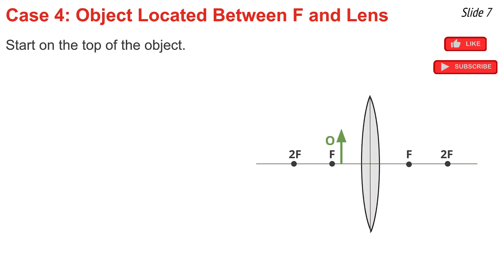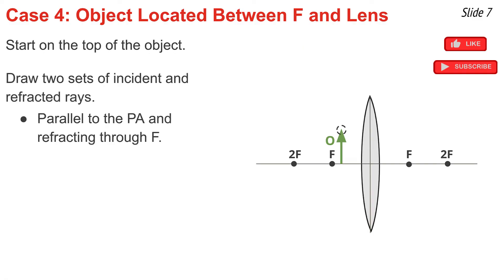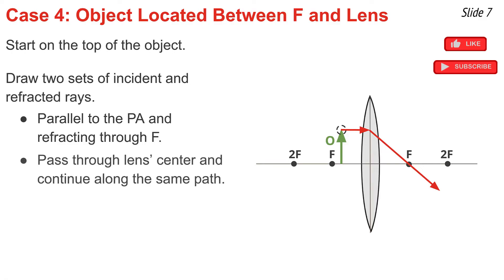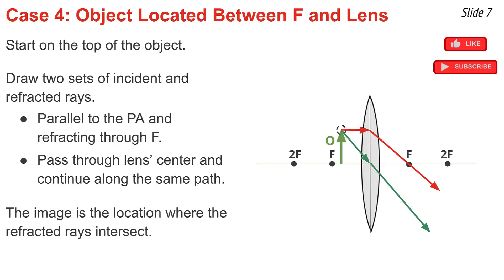My fourth and final ray diagram has the object located between the focal point and the lens — this ray diagram will look considerably different than the other three. I pick a point on the top of the object and draw two sets of incident and refracted rays. The ray of light traveling parallel to the principal axis refracts through the focal point as usual. Instead of the focal-point ray, I'll use the ray of light that passes through the lens's center and continues along the same path. These two refracted rays are diverging instead of converging to an intersection point, so to find the image I trace the red and green refracted rays backwards to the object side of the lens. Their intersection point is the image of the top of the object.